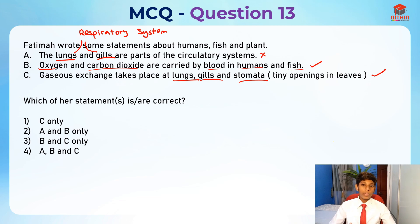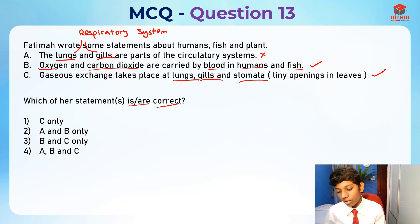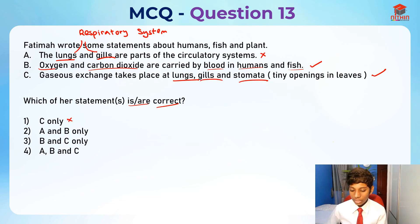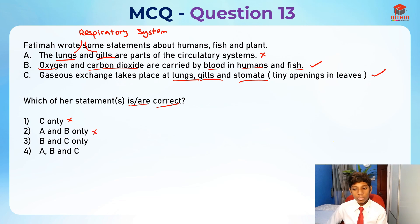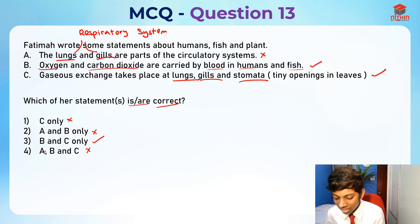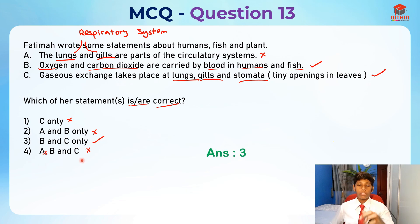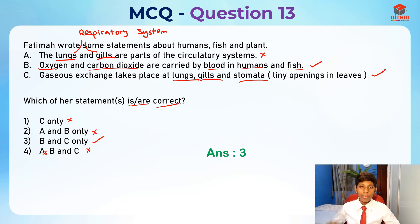They're asking which of her statements is or are correct. Option one — C only: no, C is correct but it's not C only. Option two — A and B only: no, A is not a correct statement. Option three — B and C only: yes, this is right. Option four — A, B and C: wrong because A is wrong. So the answer is option three, B and C. I hope you understood my explanation. Thank you and bye-bye, I'll see you in my next video.